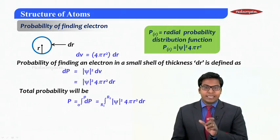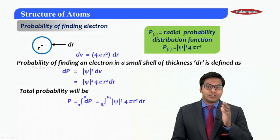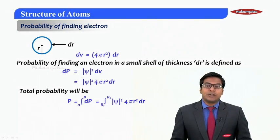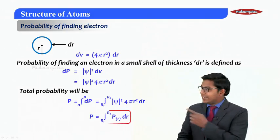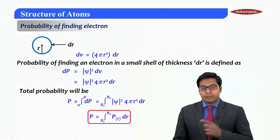That has been defined in that integral part is what we call it as the radial probability distribution function. Therefore to calculate the total probability, it is integral r1 to r2 P(r) into dr, where P(r) is the probability distribution function.